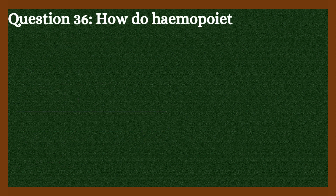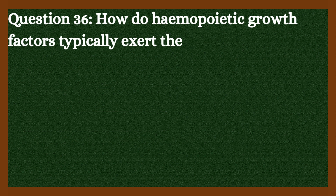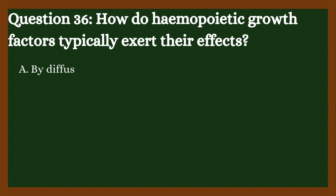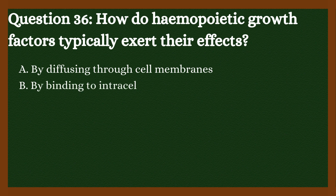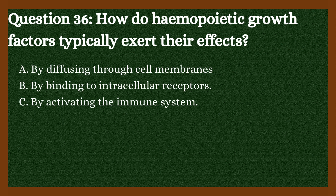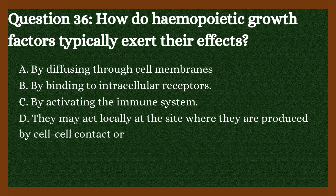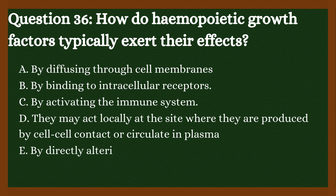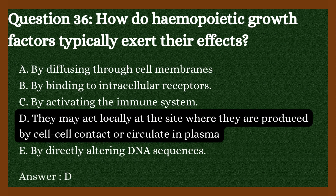Question 36: How do hemopoietic growth factors typically exert their effects? A. By diffusing through cell membranes. B. By binding to intracellular receptors. C. By activating the immune system. D. They may act locally at the site where they are produced by cell-cell contact or circulate in plasma. E. By directly altering DNA sequences. Answer is D. They may act locally at the site where they are produced by cell-cell contact or circulate in plasma.